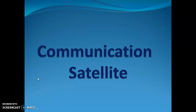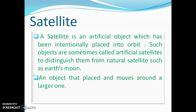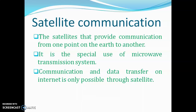Hello dear students, welcome to the video tutorial series of data communication and networking. Today in this video we will talk about communication satellites. Firstly, we will tell about what satellites are. They can be an artificial object which has been intentionally placed into an orbit — an artificial object placed around or in the orbit of another bigger object. That placed object is known as an artificial satellite. They are different from natural satellites, that is why we are using the term artificial with them. An object that is placed and moves around the larger one is known as a satellite.